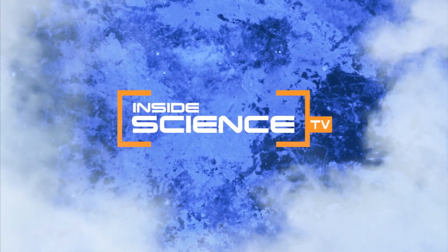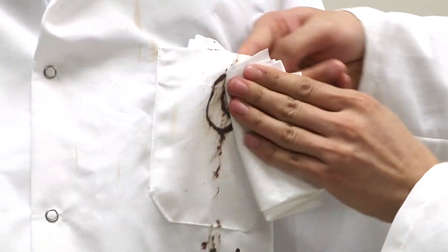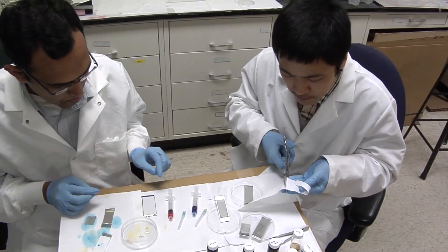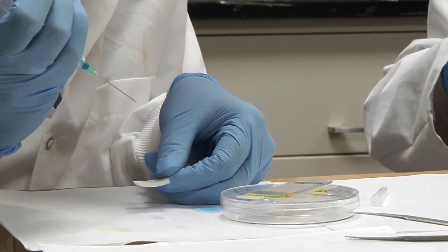Welcome to Inside Science TV. All it takes is one stain on a favorite shirt and your day is ruined. Some stains are impossible to get out. Now material scientists at the University of Michigan are paving the way to stain-free clothing with a new coating that resists almost anything.